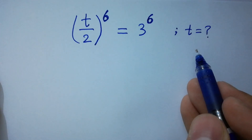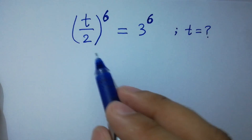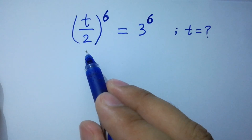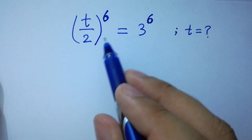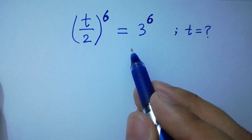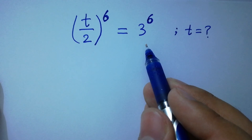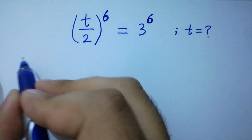Hello friends. Find the value of t if (t/2)^6 = 3^6. Let's find a solution.